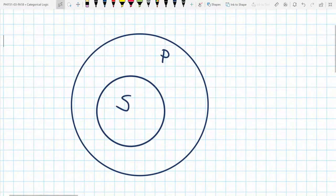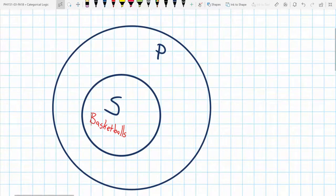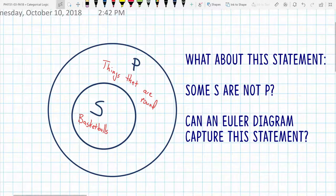We might talk about, let's think about basketballs. So if we say S is all basketballs, all basketballs are, and we'll say P is things that are round. And this is nice for certain types of statements, but they weren't really able to capture all the range of categorical statements.